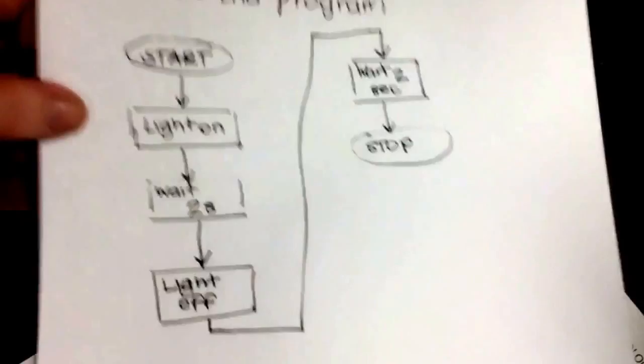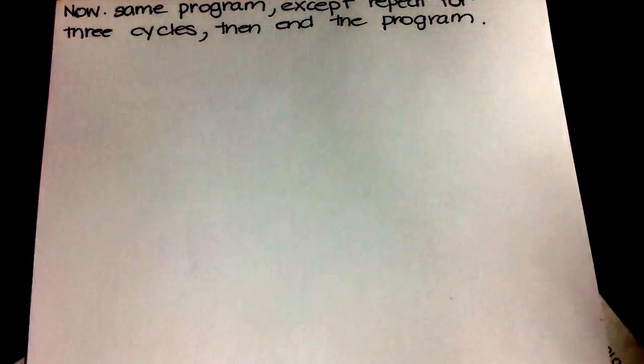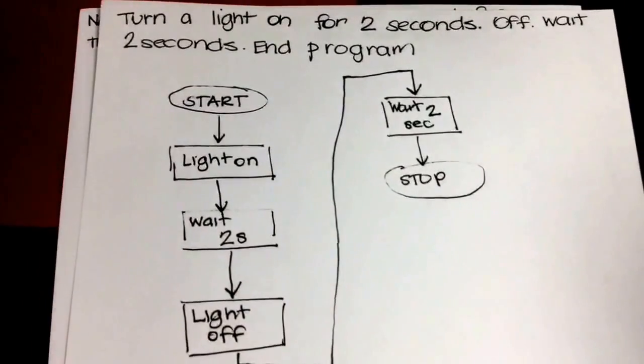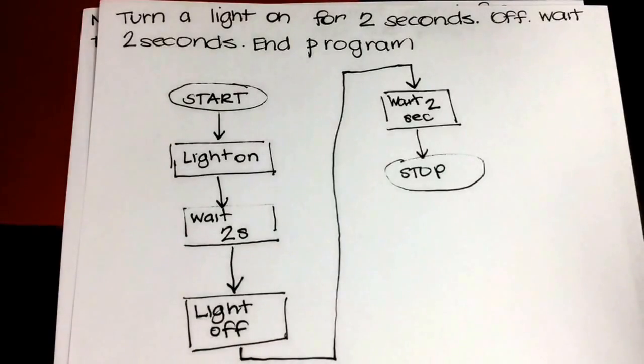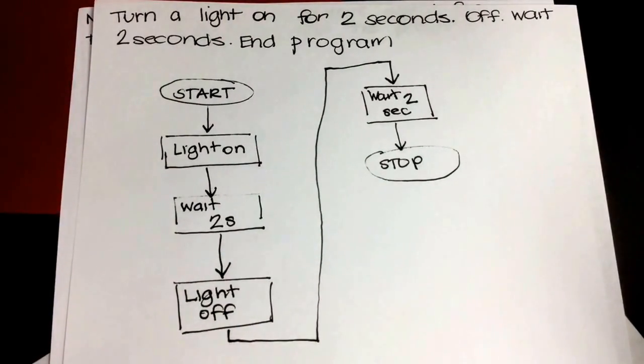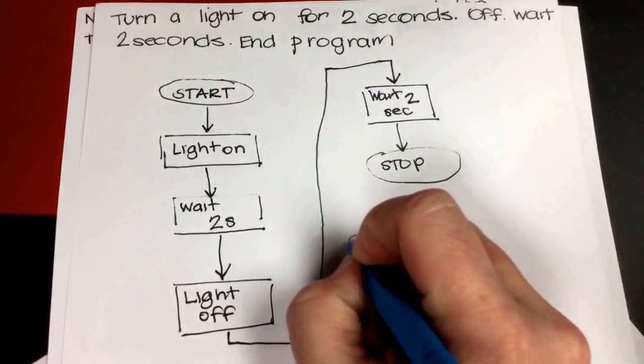But so now let's make that same problem just a little more difficult. So we want to do the same program. Light on, wait two seconds, light off, wait two seconds. But now we want to do it for three cycles and then end the program. So how would this look different? We got to have some way of keeping track which cycle we're on. So if we need to keep track of the cycle, we're going to need to add a counter.